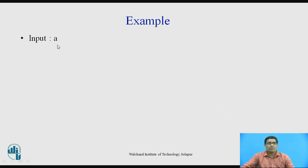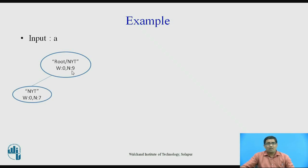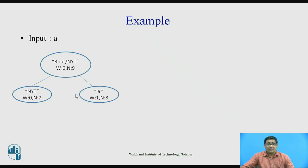For input A: consider the root NYT node with weight W=0 and node N=9. The NYT (not yet transmitted) has weight 0 and N=7 because after N=9, the previous numbers are 7 and 8. Always remember: the lower number (7) goes to the left and the higher number (8) goes to the right. Therefore I write 7 on the left and A on the right with weight 1 and N=8. So for N=9, left is 7 and right is 8.